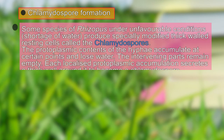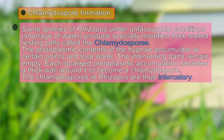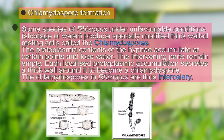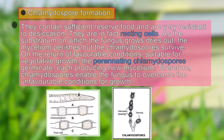The second type of asexual reproduction is formation of chlamydospores, also known as resting spores. These are formed during unfavorable conditions when there is a shortage of water. The protoplasmic content of the hyphae accumulates at certain points, loses water, and each localized accumulation secretes a thick wall around itself, becoming a chlamydospore. In Rhizopus, chlamydospores are intercalary — between two chlamydospores there is vegetative hyphae.